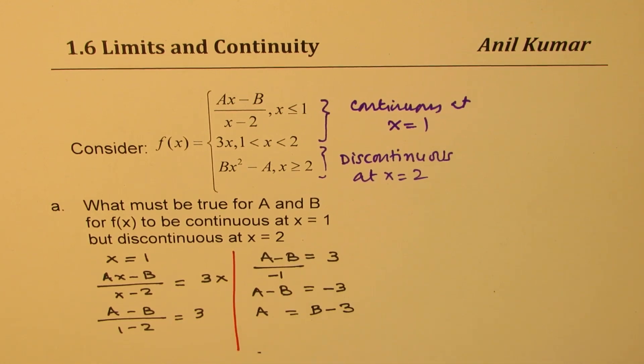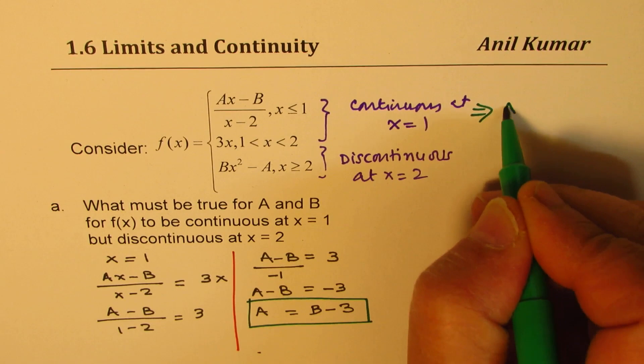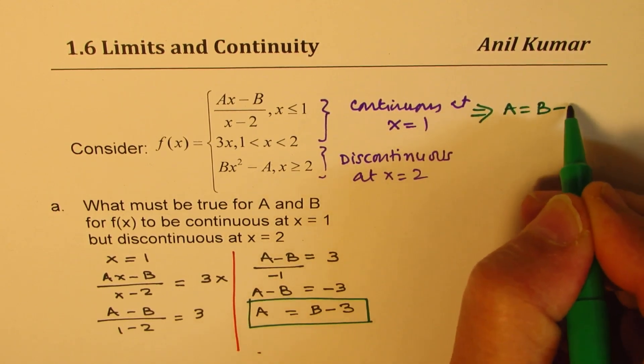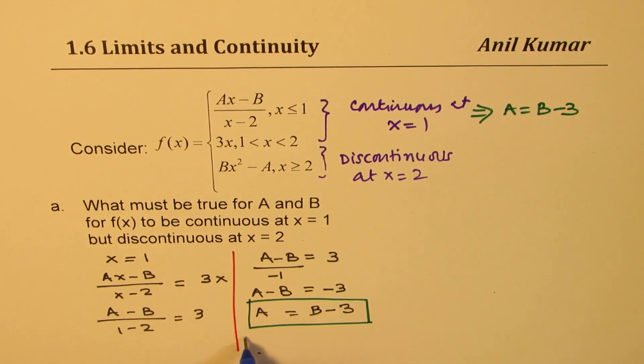So this becomes the condition for the function to be continuous at x equals 1. The condition here is that A should equal B minus 3. There could be many solutions. As you can see here we actually get many solutions. For example, if B is 5 then A is 2. We have many solutions.